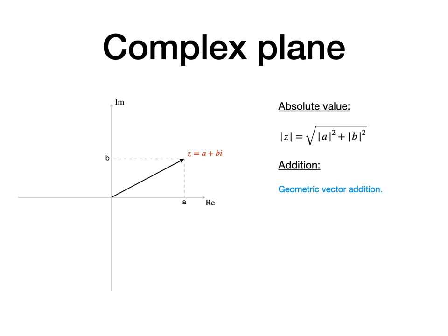The addition of two complex numbers in the plane is done by simply adding their two arrow vectors geometrically.